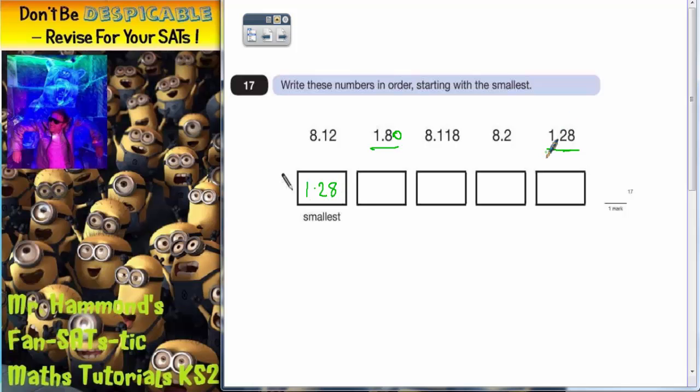So that's that one gone. Cross it off once you're done with it. Then obviously the only other number beginning with 1 is 1.80 or 1.8, so we can just pop that in. You might as well just put the original number in, 1.8.